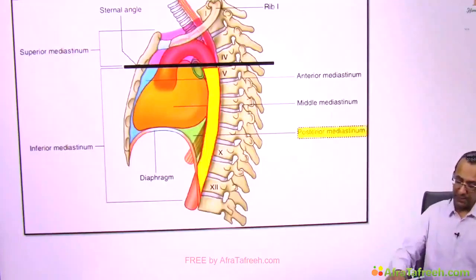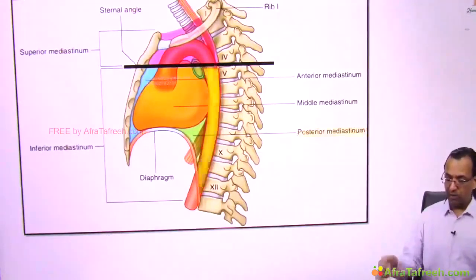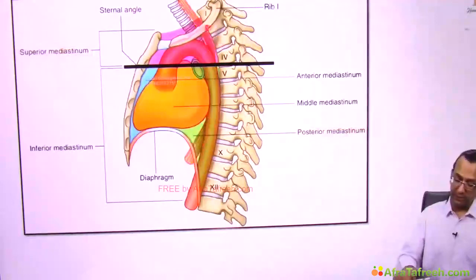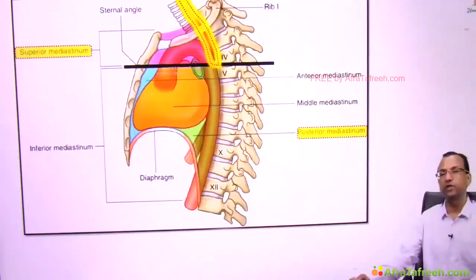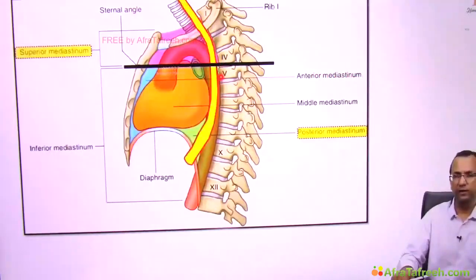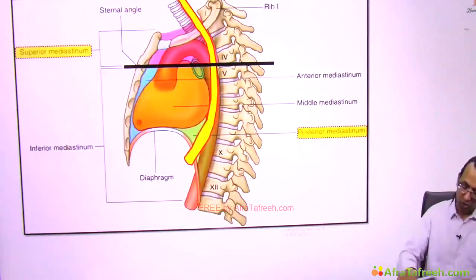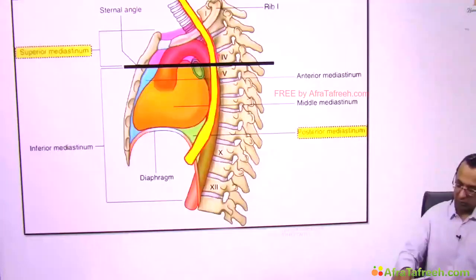The descending thoracic aorta is behind the heart, so it is in the posterior mediastinum. Along with the descending thoracic aorta, you have the esophagus. The esophagus is not only present in the posterior mediastinum — it was already present in the superior mediastinum, sandwiched between the trachea anteriorly and the vertebra posteriorly. There is no esophagus in the anterior mediastinum. The esophagus passes through the superior mediastinum and also the posterior mediastinum.